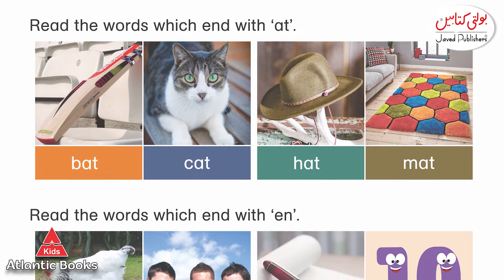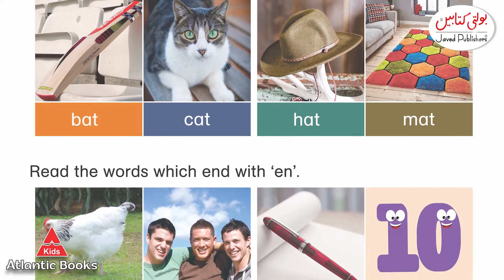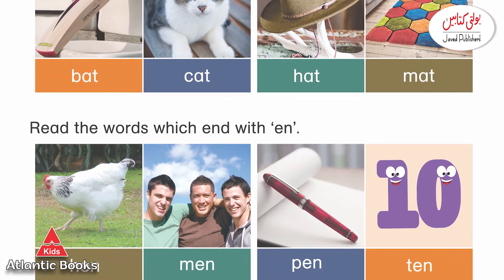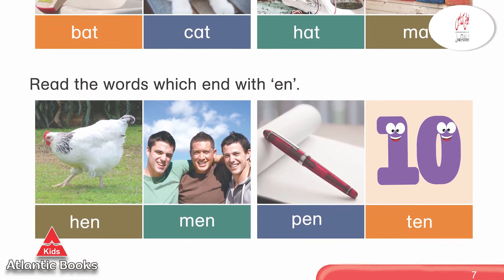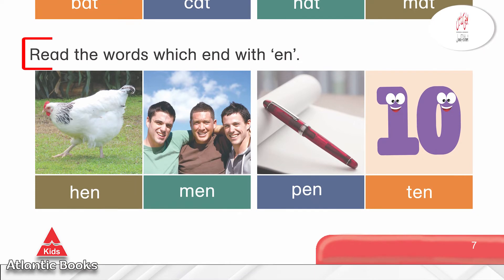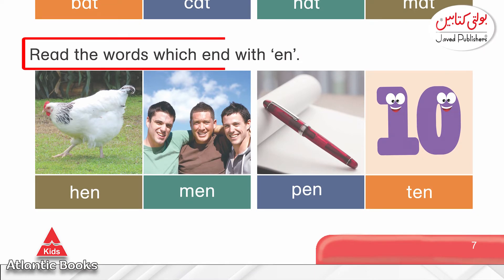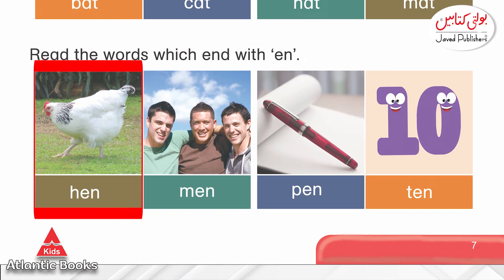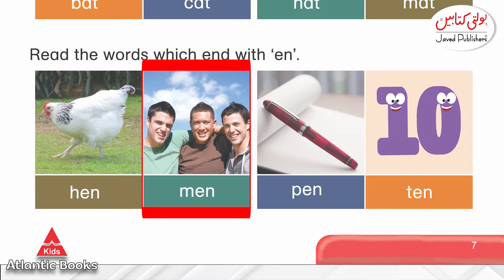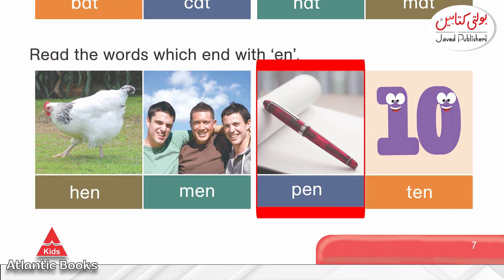The last combination on this page is A and N, which makes the sound 'en'. The words are: hen, men, pen, ten.